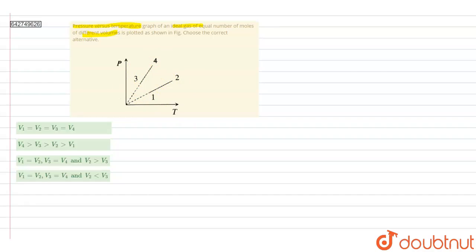Now, from ideal gas equation, we have PV equals nRT. Therefore, from the ideal gas law, the pressure versus temperature graph is always a straight line only when volume is constant.